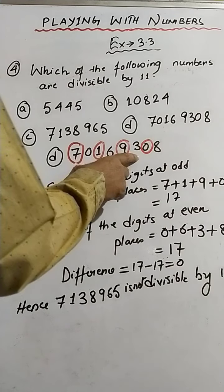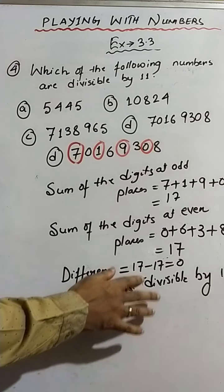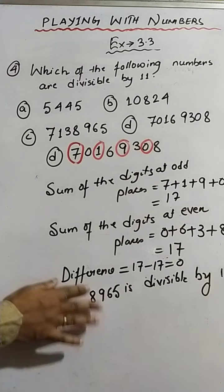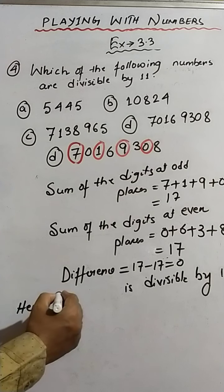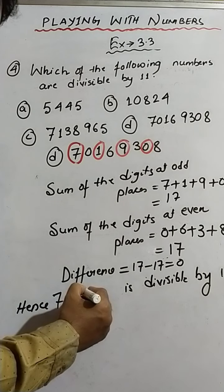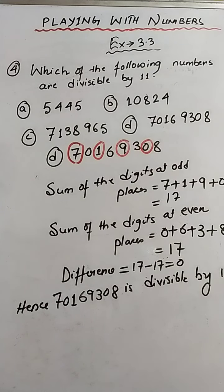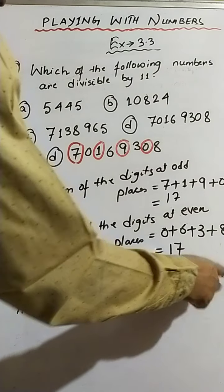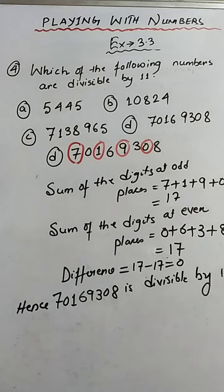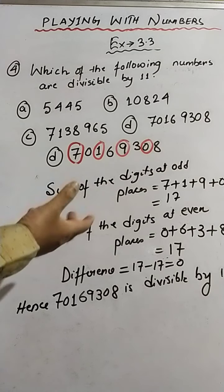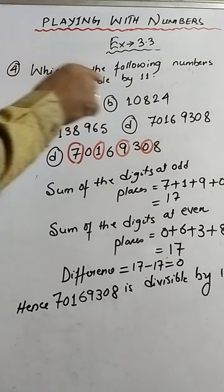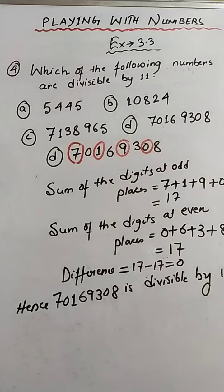Since the difference is 0, the required number is divisible by 11. Hence 70169308 is divisible by 11. That's it for today. Thank you so much. God bless you all. And just to remind you, the rest of the two sums — sum number E and F — will be your homework.